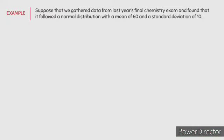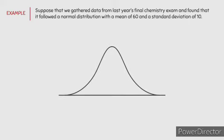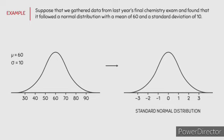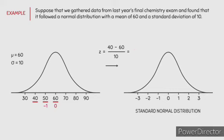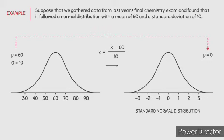Standardization uses the formula: z equals x minus mu divided by sigma. Suppose data from last year's final chemistry exam followed a normal distribution with a mean of 60 and standard deviation of 10. To convert this to the standard normal distribution, we plug in mu equals 60 and sigma equals 10. For example, plugging in x equals 60 gives z equals 0, x equals 50 gives z equals negative 1, and x equals 40 gives z equals negative 2. The mean will always convert to 0 and each standard deviation corresponds to 1.